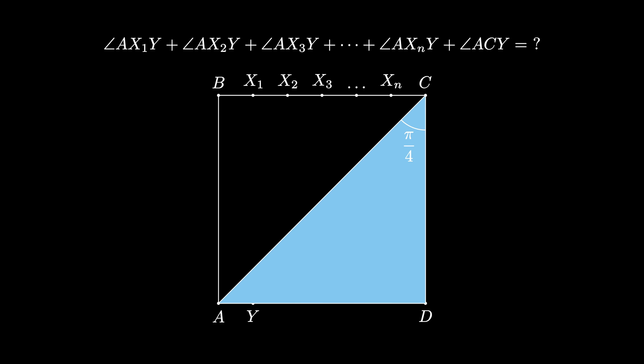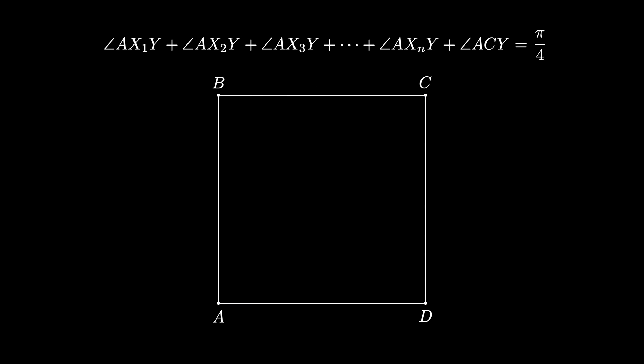And that means that the angle measurement of the top angles added together must be half of 90 degrees, which is 45 degrees, or an arc length of π over 4.